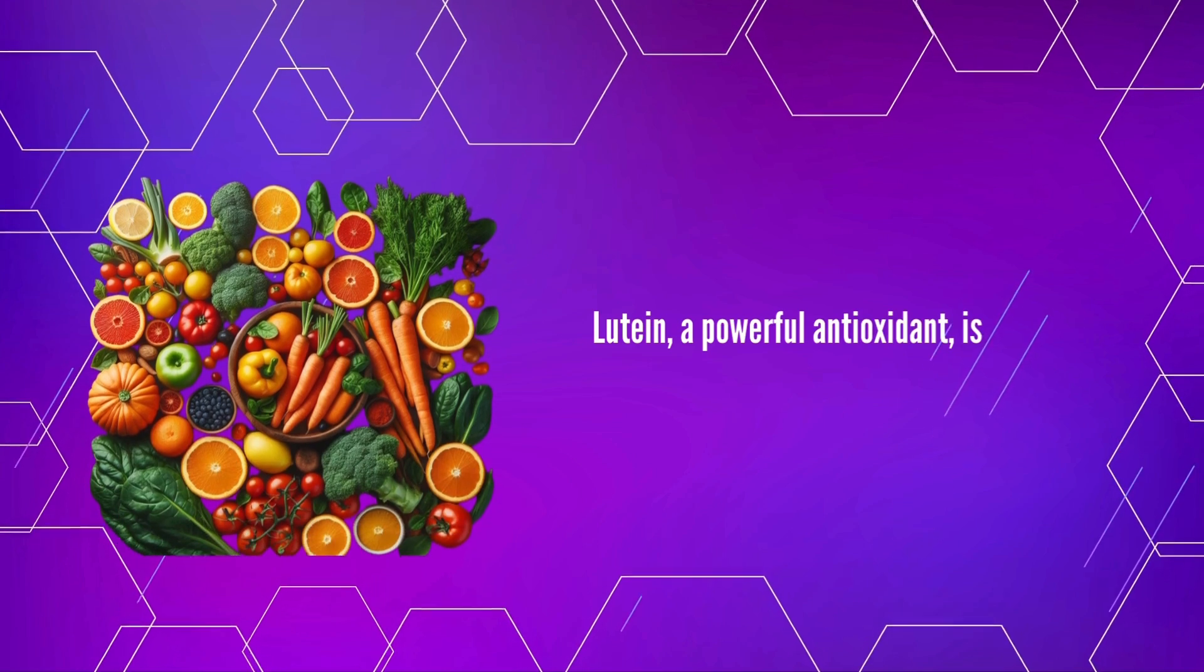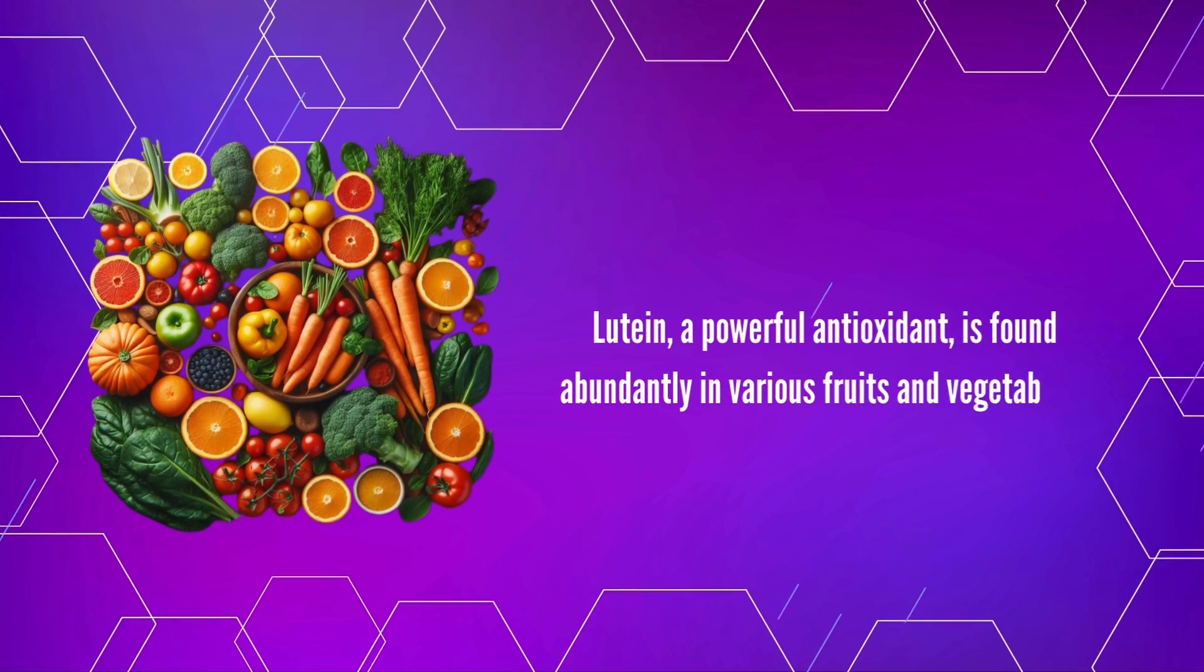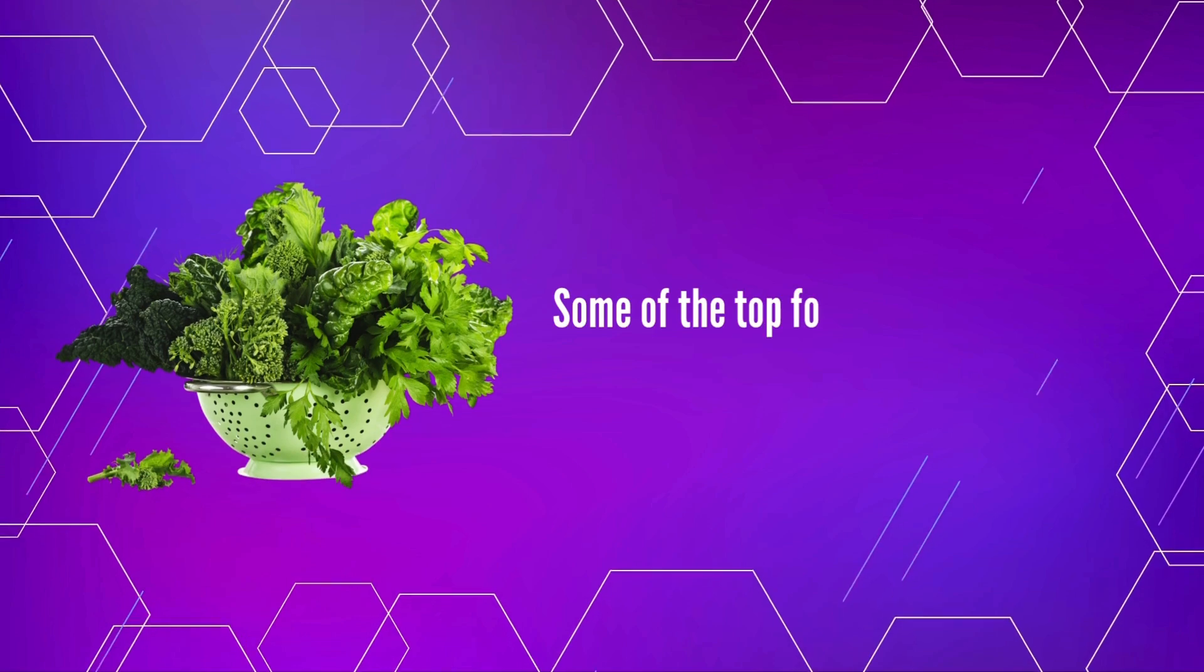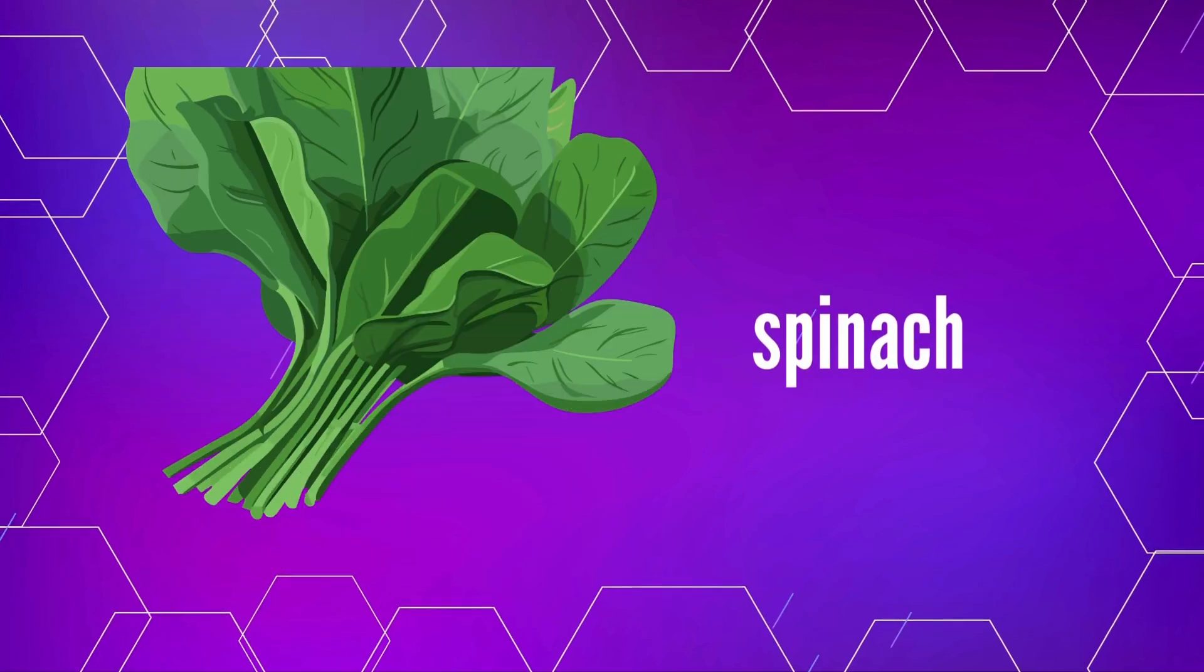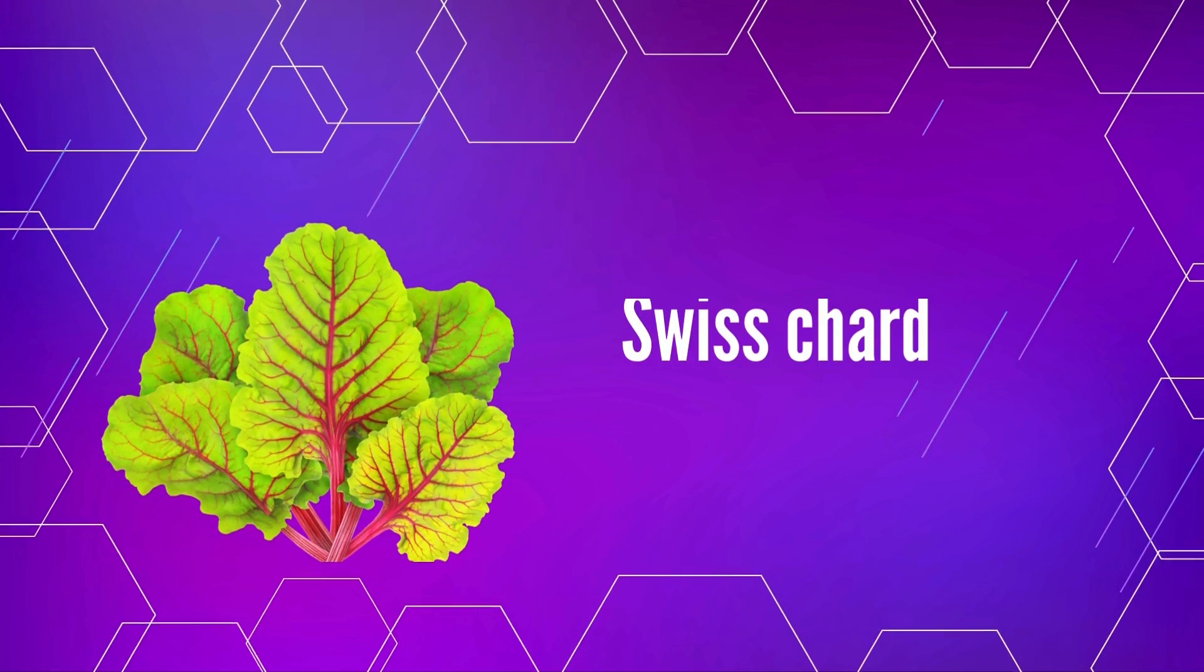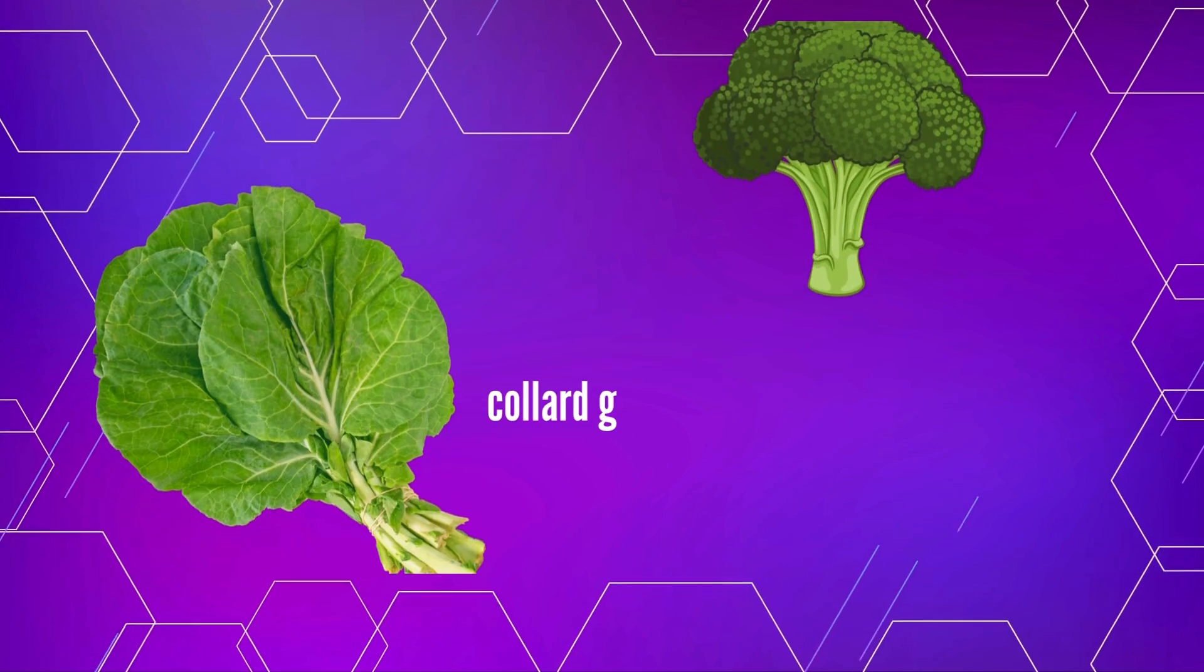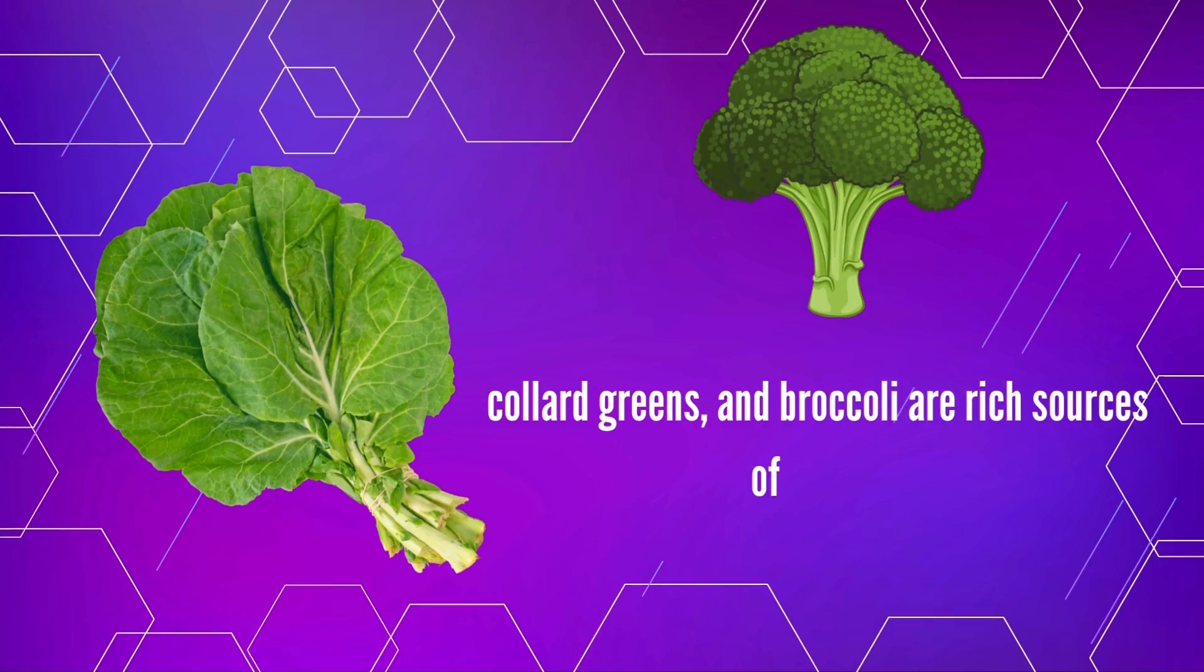Lutein, a powerful antioxidant, is found abundantly in various fruits and vegetables. Some of the top food sources of lutein include leafy greens: spinach, kale, Swiss chard, collard greens, and broccoli are rich sources of lutein.